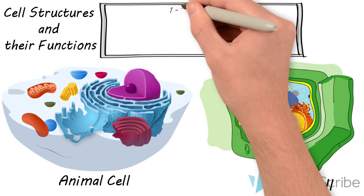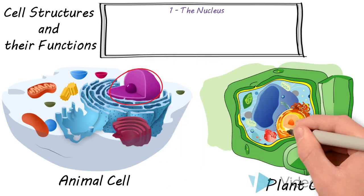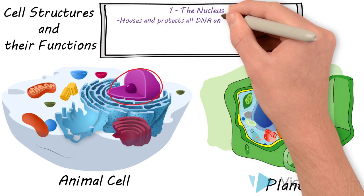Let's talk about the nucleus first. The nucleus is the brain of the cell. This houses and protects all the DNA and genetic information for the cell. That's the nucleus.